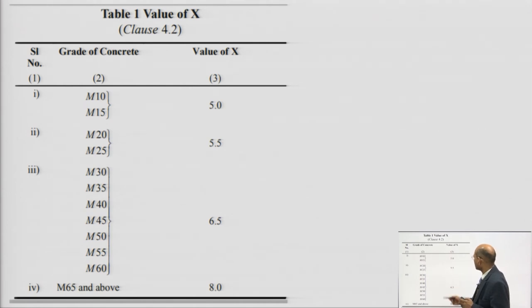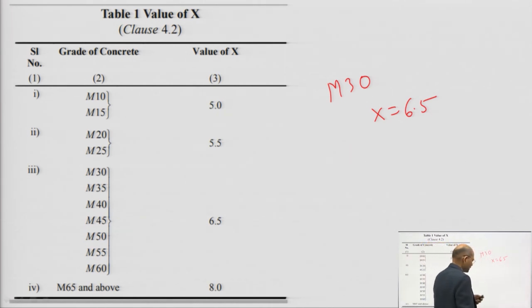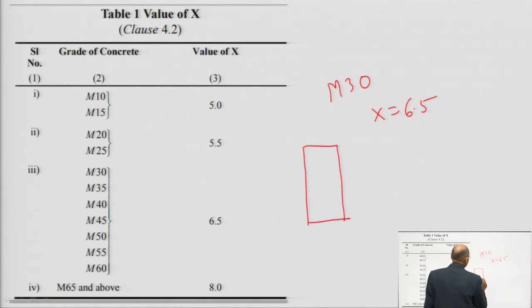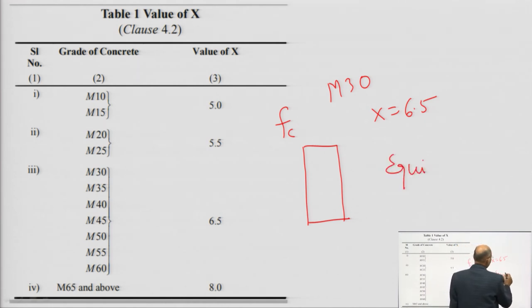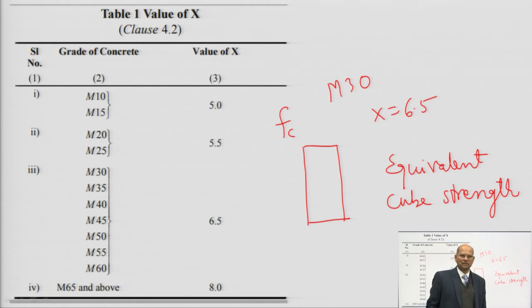The value of X (statistical constant) is given in a table — for M30 grade concrete, X equals 6.5. Concrete grades are classified as: M10 to M20 is ordinary concrete, M25 to M60 is standard concrete, and M65 to M100 is high strength concrete. If you have cylindrical strength and want equivalent cube strength, that is 5/4 times the cylindrical compressive strength.